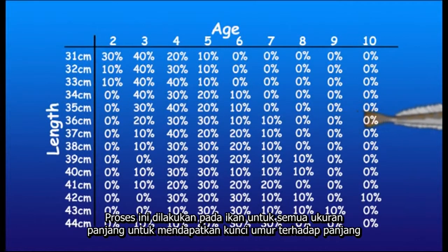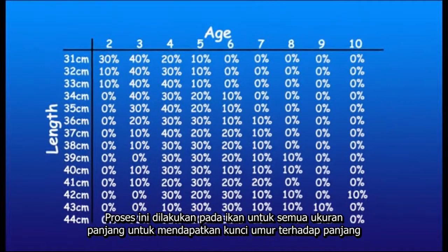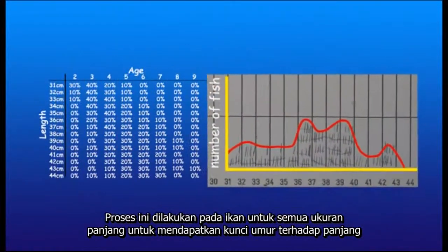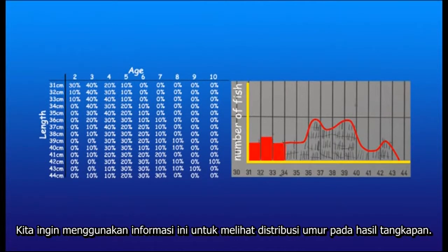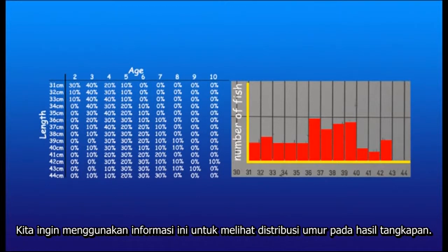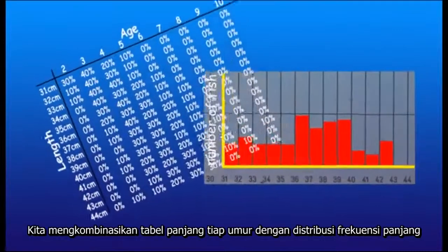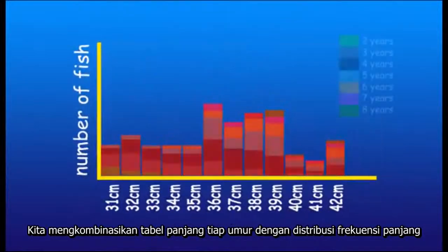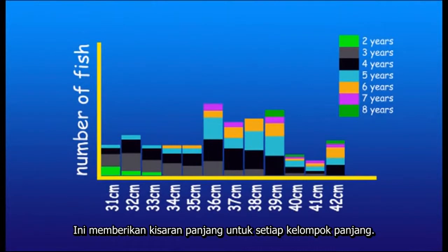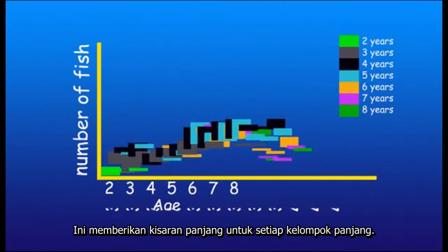We're now up to the final step: pulling all this information together so we can understand the age distribution of the whole tiger flathead catch. Firstly, let's turn our length frequency distribution graph into a bar graph. This will help us merge the two together. From these two figures, we know how many fish of each length were in the catch and the percentage of fish of each age in each 1cm length category. If we simply merge our table into the length frequency distribution, we can clearly see that each length has a range of different ages.